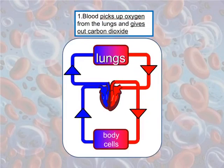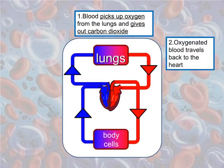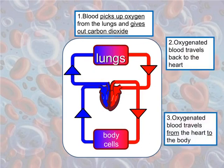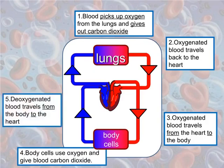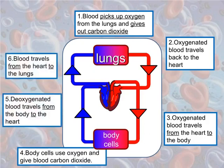Blood picks up oxygen from the lungs and gives out carbon dioxide. Oxygenated blood travels back to the heart, then from the heart to the body. Body cells use oxygen and give blood carbon dioxide. Deoxygenated blood travels from the body to the heart, and lastly blood travels from the heart to the lungs.